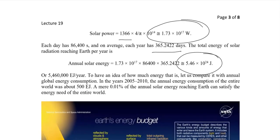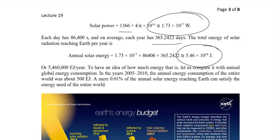If you look at total global energy consumption in the years 2000, 2005, and 2010, it is around 500 exajoules. That means if we could harness just 0.01 percent of the annual solar energy reaching the Earth, it could satisfy the energy needs of the entire world. So even a tiny fraction of incident solar energy is sufficient to meet total global demand.